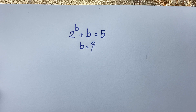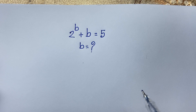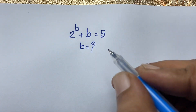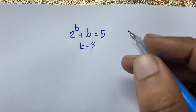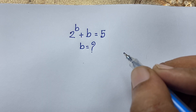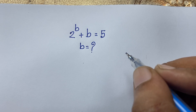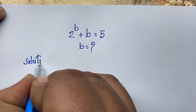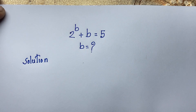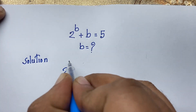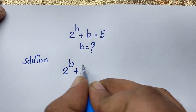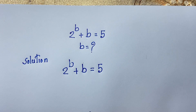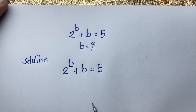Hello everyone. In this video we have solved a nice Harvard University intense exam question: 2 to the power b plus b is equal to 5. What is b? How to solve this exponential math problem? Our equation is 2 to the power b plus b is equal to 5.